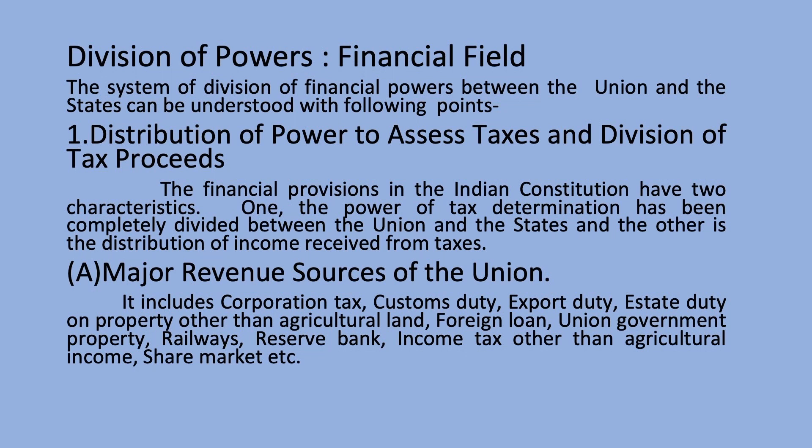The financial provisions in the Indian constitution have two characteristics: the power of tax determination has been completely divided between the union and the states, and the other is the distribution of income received from taxes. Major revenue resources of the union include corporation tax, customs duty, export duty, estate duty on property other than agricultural land, foreign loans, union government property, railways, the Reserve Bank, income tax other than agricultural income, share market, etc.